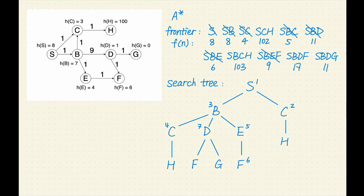Finally, SBDG has the lowest F value of 11. Let's remove SBDG from the frontier. G is a goal, so let's return the solution SBDG.